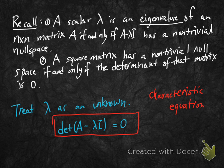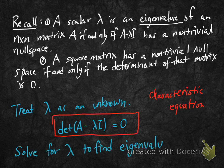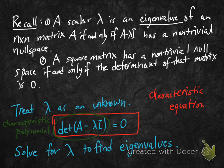We're going to solve the characteristic equation for lambda to find the eigenvalues. The left side of this equation, this polynomial — determinant of A minus lambda I — is called the characteristic polynomial.